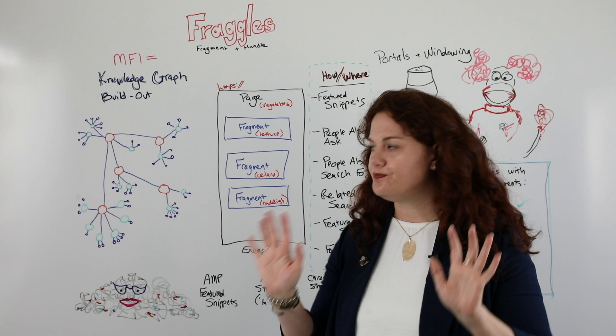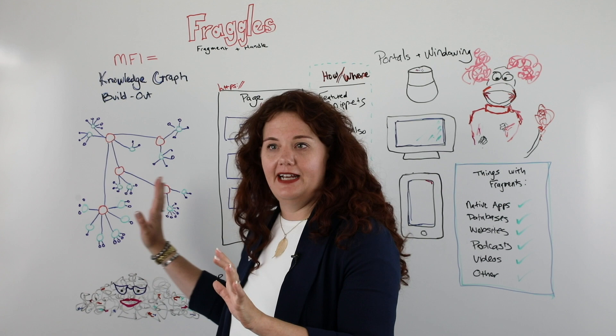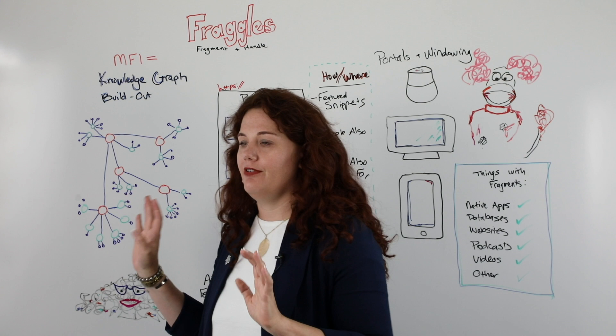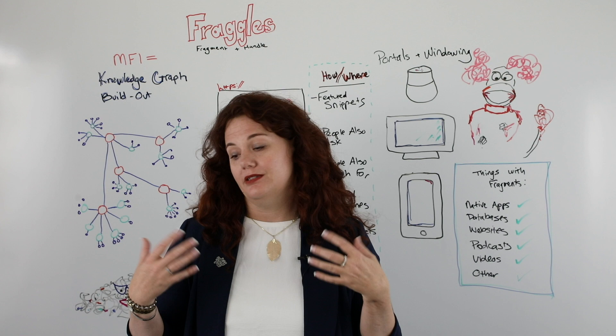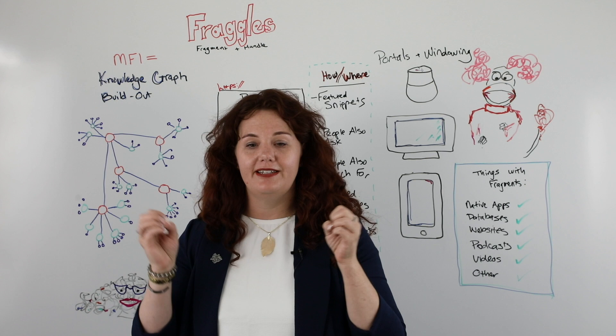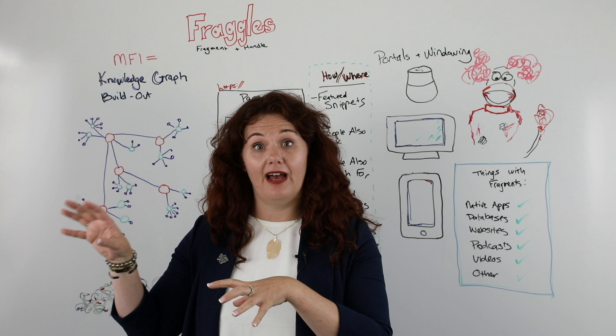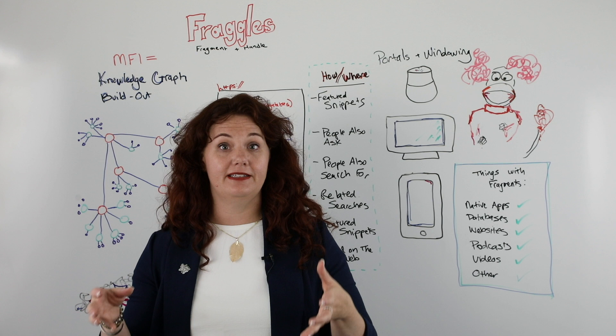Let's start with the idea of mobile-first indexing, because you have to understand that before you can go on to understand Fraggles. I believe mobile-first indexing is about a little bit more than what Google says. Google says it was just a change of the crawler — they had a desktop crawler doing the heavy lifting, and now they have a mobile crawler doing it. While I think that's true, I think there's more going on behind the scenes, and we've seen a lot of evidence of this.